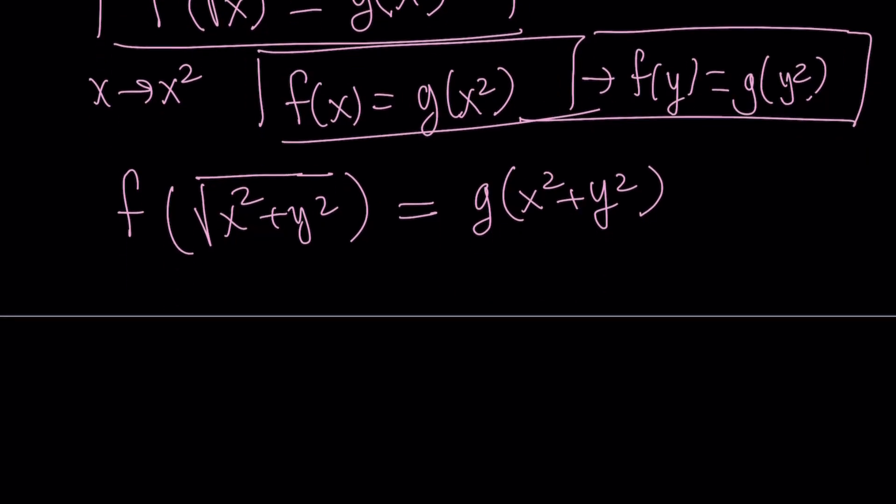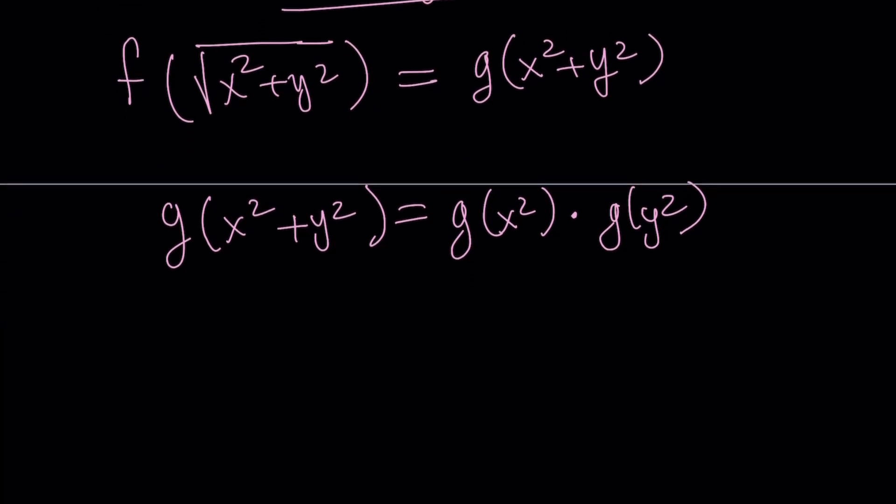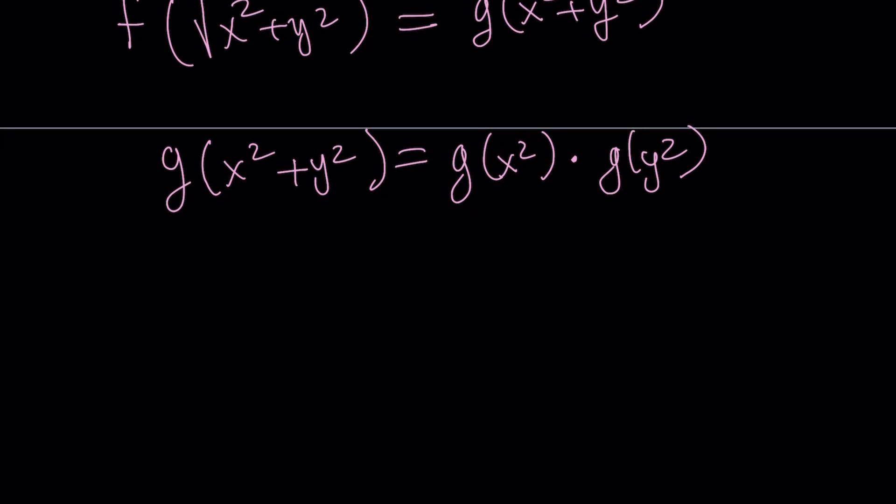So now, I can basically replace f of x with g of x squared and f of y with g of y squared here. And that gives us the following. The left-hand side already turned into g of x squared plus y squared. And the right-hand side is going to become g of x squared times g of y squared. And this is nice, because now this, hopefully, looks like something we know. But I'm going to use more substitution here, so bear with me on that.